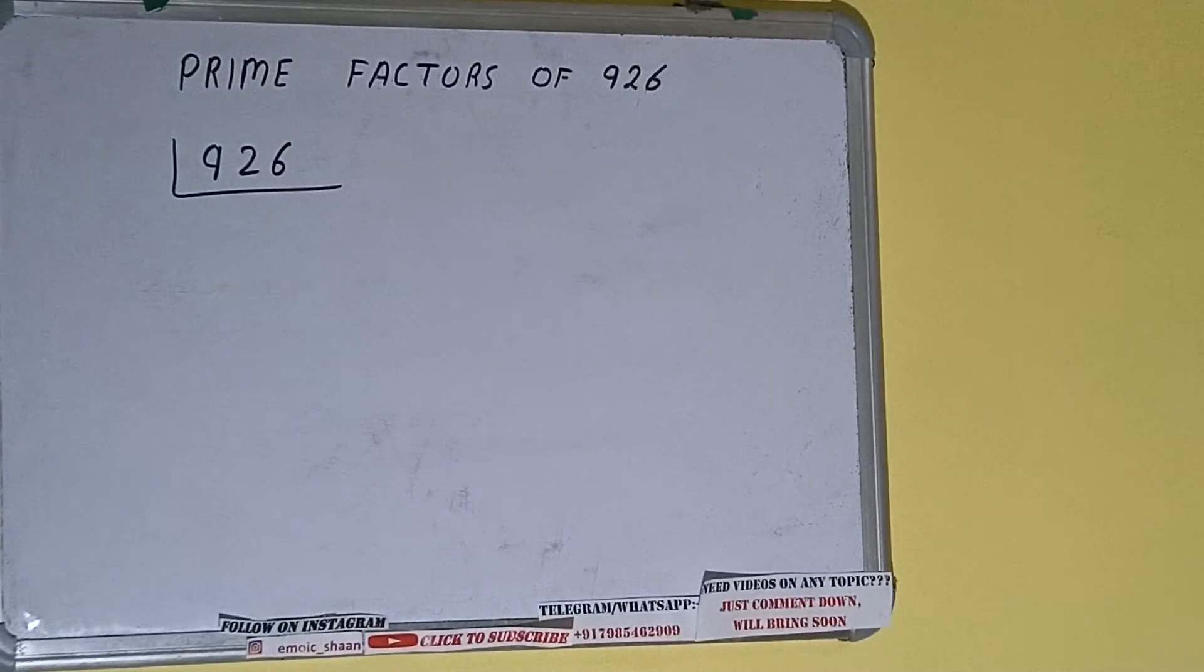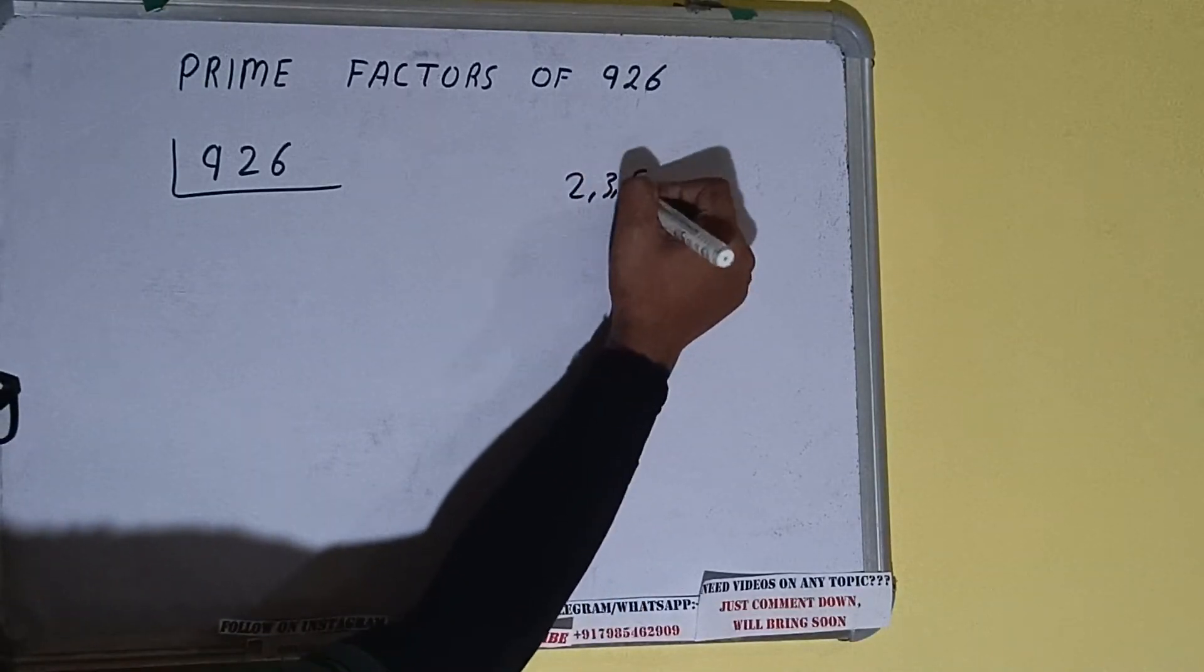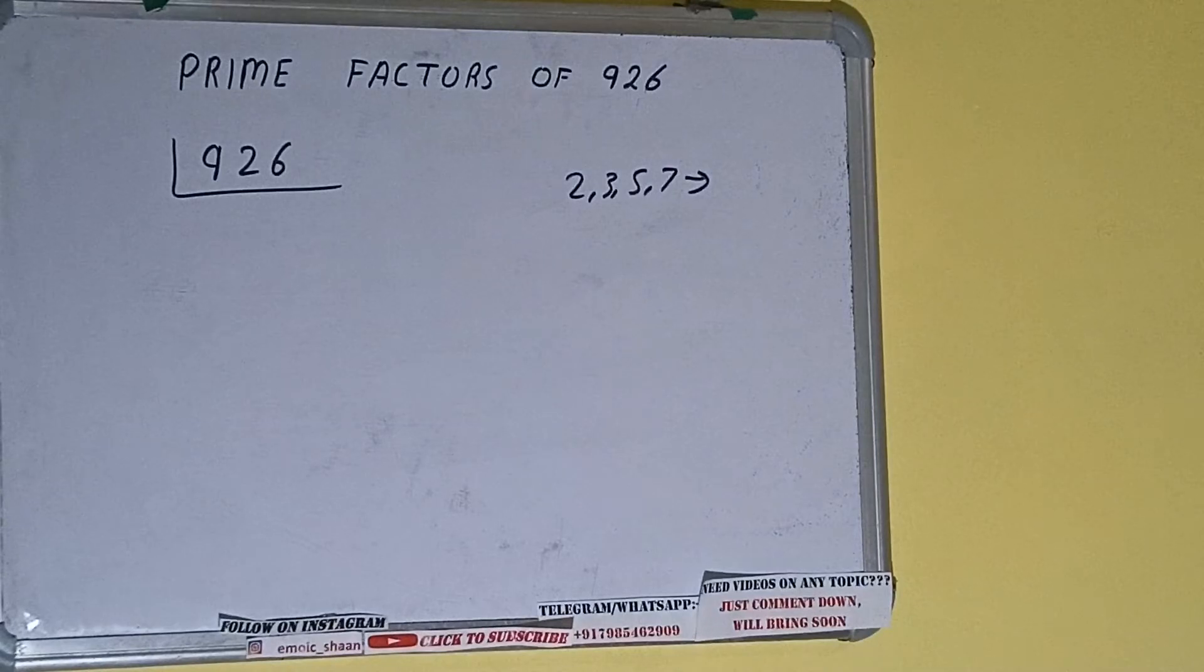The next thing we need to know about is what are prime numbers. Prime numbers are numbers that are divisible by 1 and the number itself, like 2, 3, 5, 7, and so on.